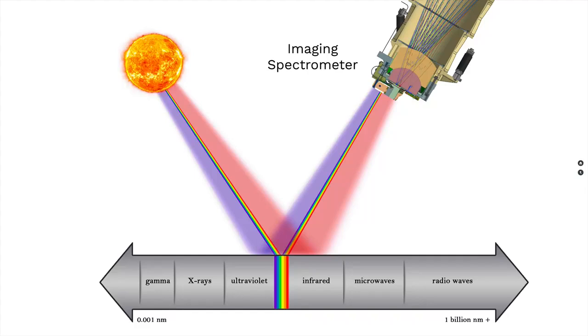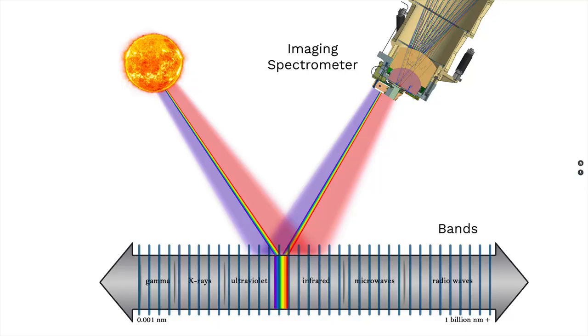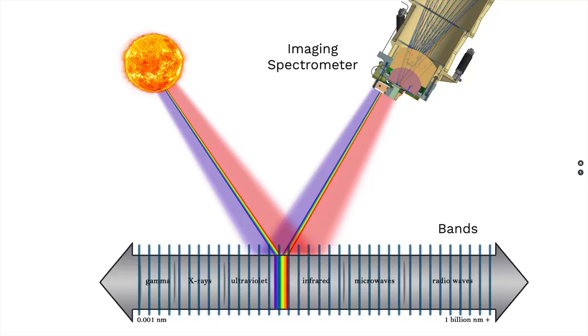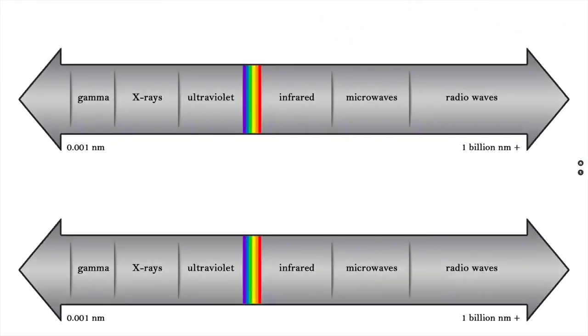The imaging spectrometer divides the spectrum into groups of wavelengths called bands. The range of electromagnetic spectrum covered by each band is what we call spectral resolution of an image.